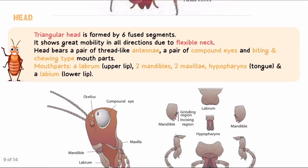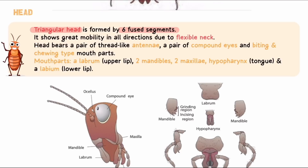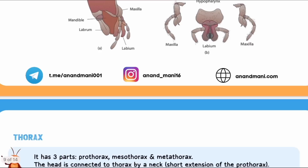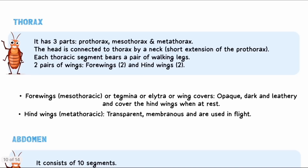The body is divided into three parts: head, thorax, and abdomen. The head is triangular and appears as one segment in adults, but was formed from six fused segments in the embryo. It has great mobility with a flexible neck. Structures on the head include one pair of antennae, one pair of compound eyes, and mouth parts. The mouth is of biting and chewing type. Mouth parts include: labrum (upper lip), labium (lower lip), two mandibles (for grinding), two maxillae, and a tongue-like structure called hypopharynx. NCERT diagrams show all these parts and diagrammatic questions have appeared in PYQs.